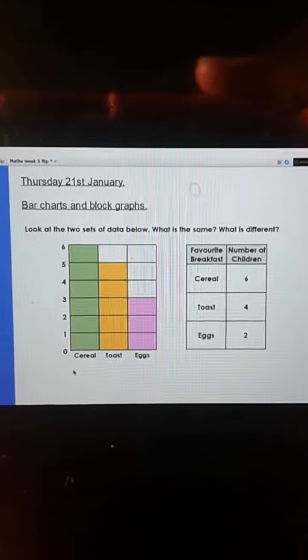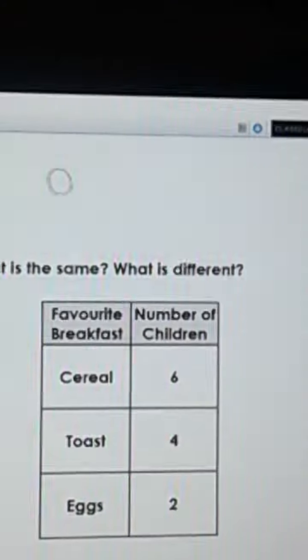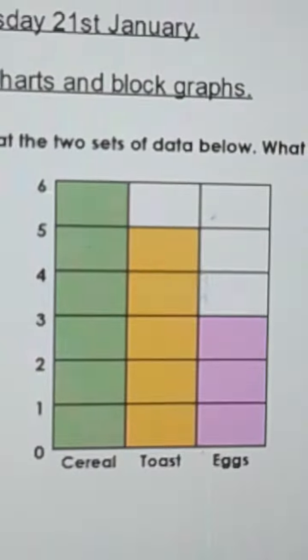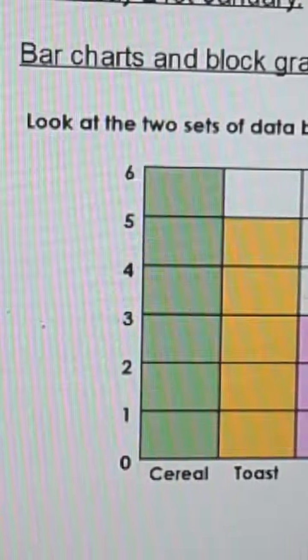How many have I got in cereals? I've got one, two, three, four, five, six. And the number of children in cereals is six. So that's the same.